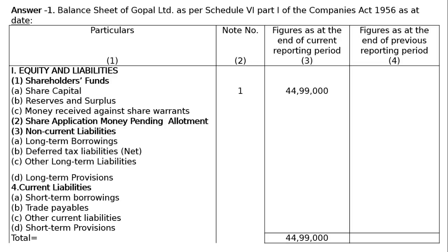1. Equity and Liabilities. Under number 1, shareholders' funds will be there. Under this, share capital — we will be discussing about Note 1 later on — that is Note 1, and the amount being Rs 44,99,000.